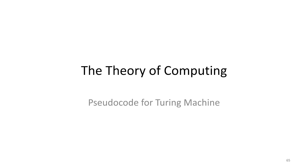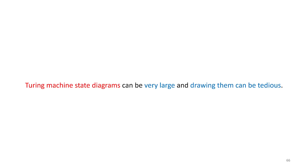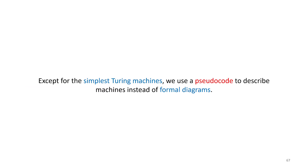Welcome. In this video I want to talk about how we can use pseudocode to describe our Turing machines. When we're designing Turing machines and being very formal about it and drawing state diagrams, we reach the point where we realize the state diagram we want to design is going to be very large and pretty tedious to draw every single transition.